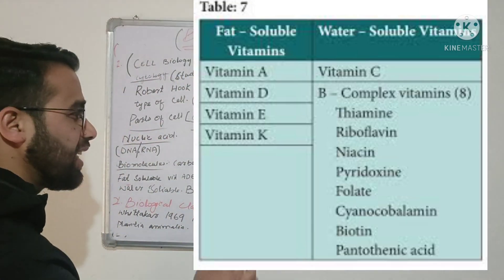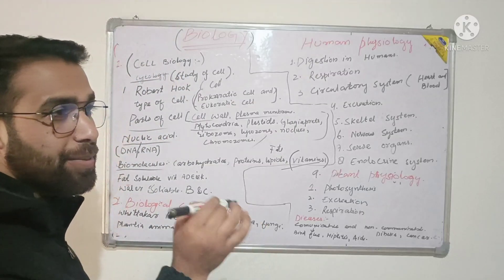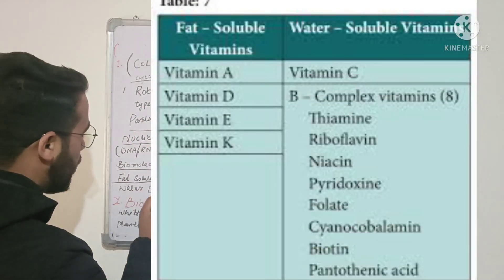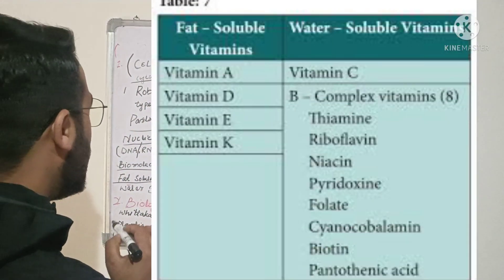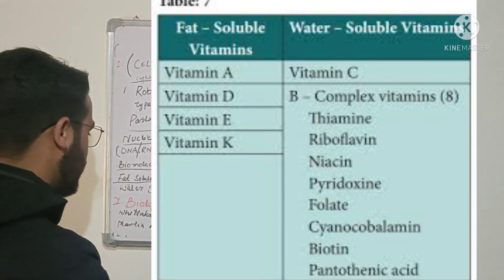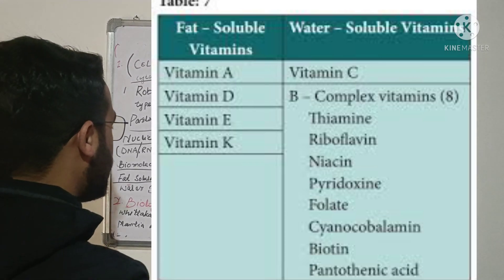Then you have vitamins. This topic you should focus on because it appears in every exam. Vitamins are two types: fat-soluble vitamins and water-soluble vitamins. A, D, E, and K are fat-soluble vitamins. B and C are water-soluble vitamins. This is what you will study in cell biology.